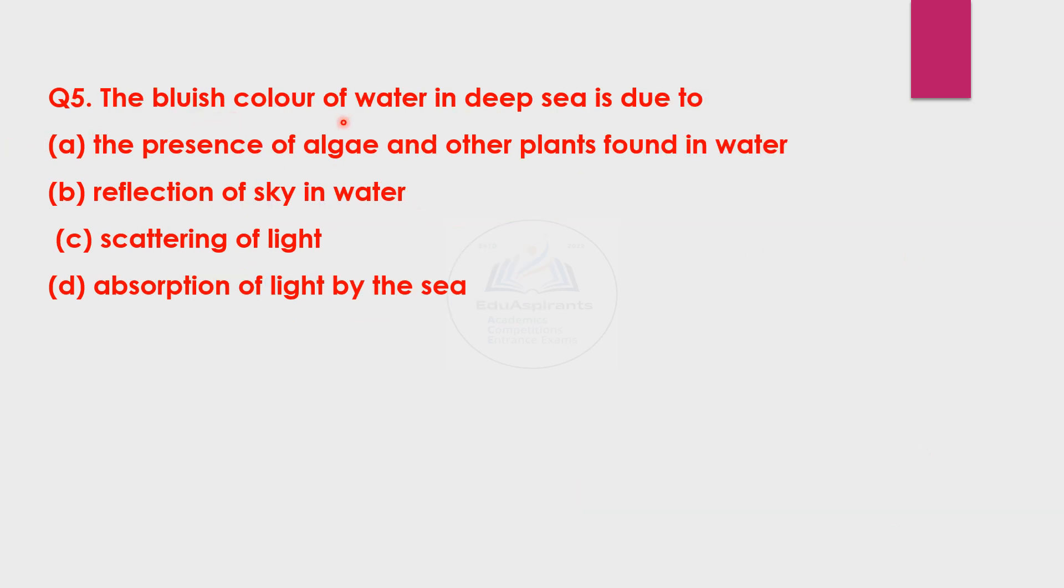Question 5: the bluish color of water in deep sea is due to the presence of algae and other plants found in water, reflection of sky in water, scattering of light, or absorption of light by the sea.